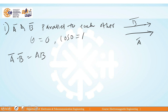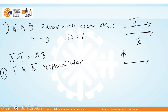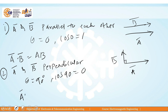Next case: if two vectors are perpendicular to each other — suppose vector A and vector B are perpendicular, this is vector A and this is vector B — the angle between these two is 90 degrees. Since cos90° = 0, the result of the dot product A-bar dot B-bar is equal to 0. So when two vectors are perpendicular to each other, the result of the dot product is 0.